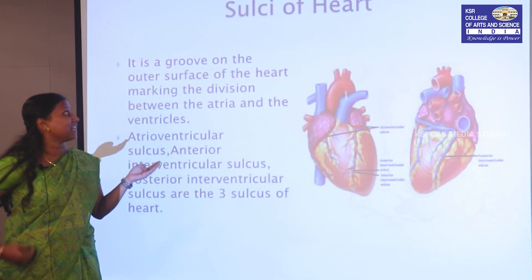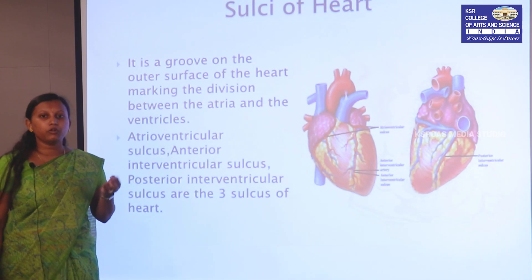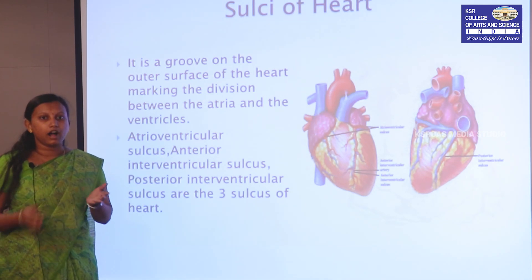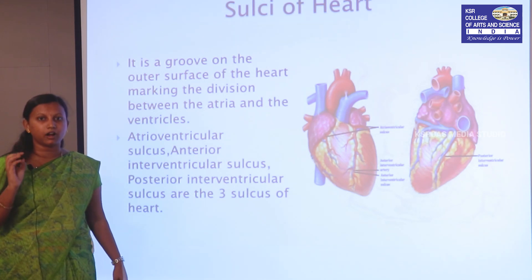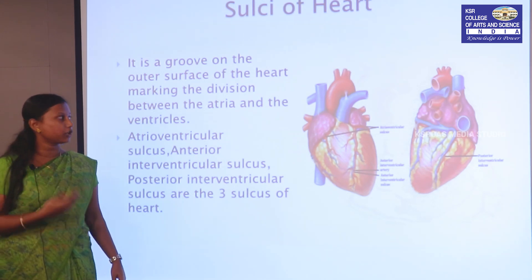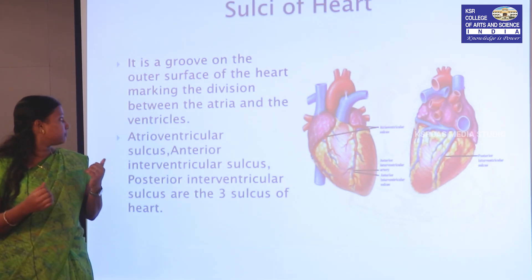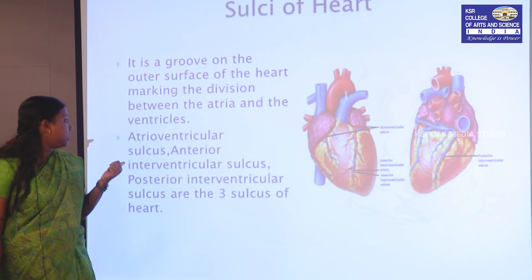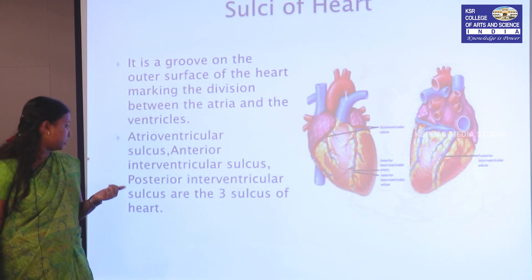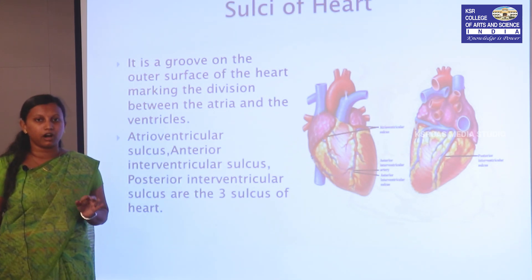Sulci are known as grooves. In the heart's outer layer, there are arteries and veins which are known as grooves of the heart. These are divided into three: the atrioventricular sulcus, the anterior interventricular sulcus, and the posterior interventricular sulcus — totalling three sulci in our heart.